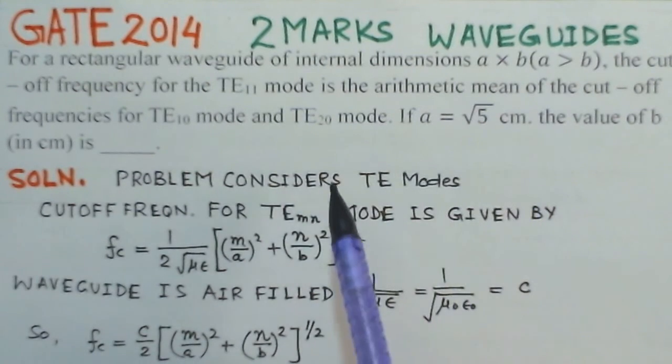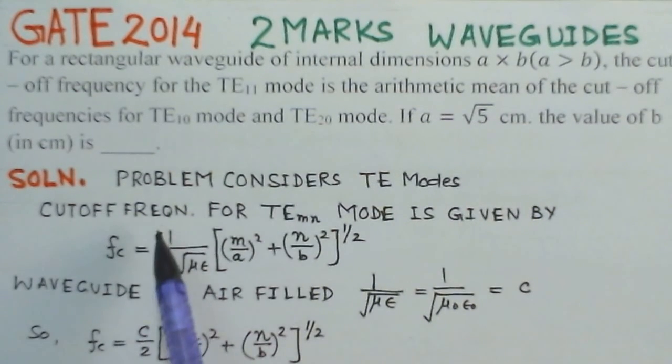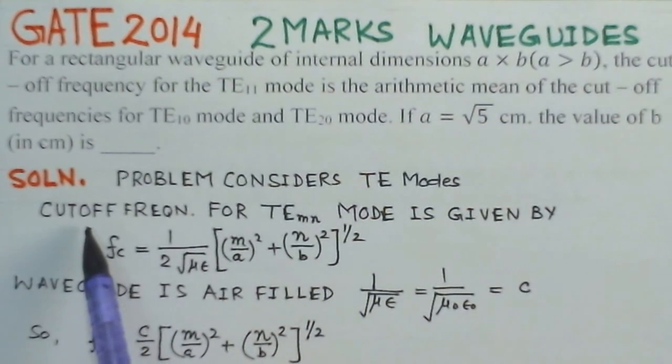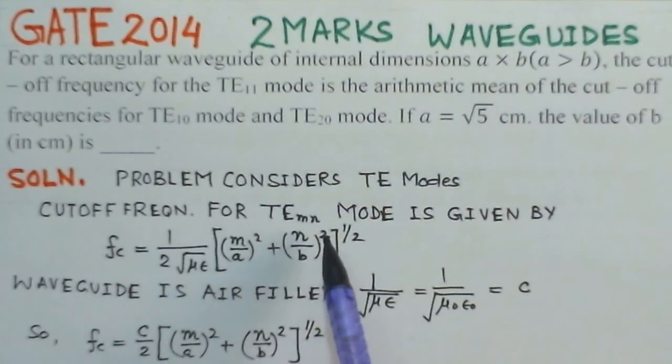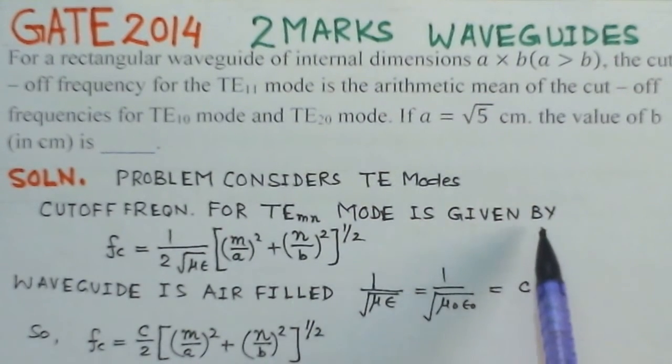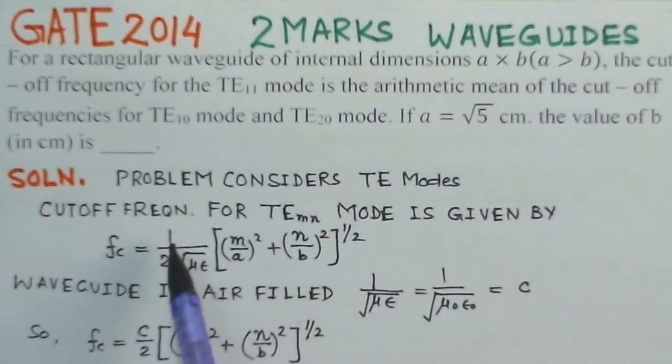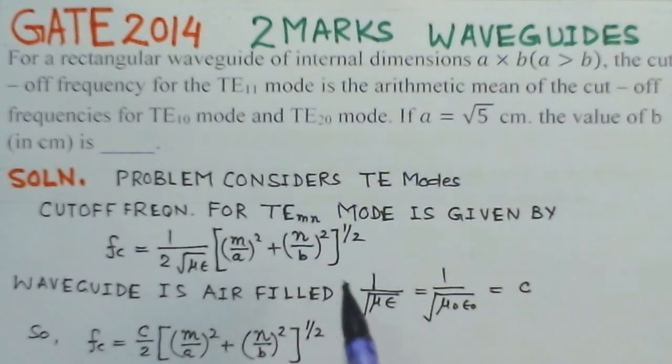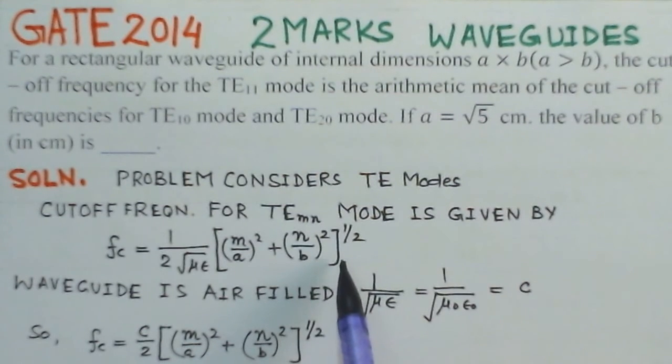We will try to see the cutoff frequency for the TE modes. So, we notice here the cutoff frequency for the MN mode is given by the relation Fc equals 1 over 2 root mu epsilon times M over A whole squared plus N by B whole squared under root. This is the general equation for the cutoff frequency for the TEmN mode.